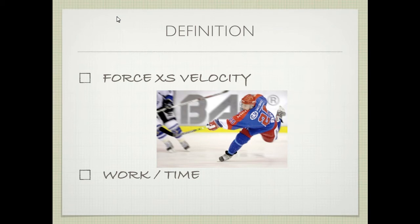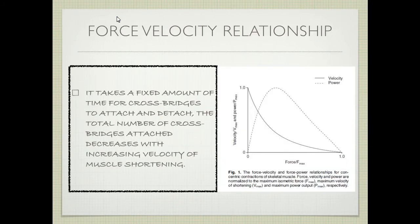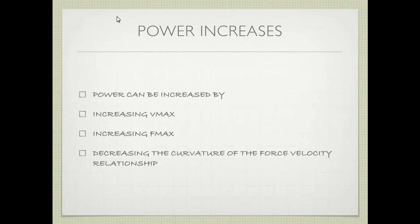Talking about force times velocity, it's very important because it describes the relationship between those two in power. Right here we see the classic force-velocity curve, with force on the horizontal axis and velocity on the vertical. As force increases, velocity decreases — one reason being that it takes a fixed amount of time for cross-bridges to attach and detach, so the total number attached decreases with increasing velocity and muscle shortening. We can increase power by increasing velocity max, force max, or decreasing the curvature of the force-velocity relationship.